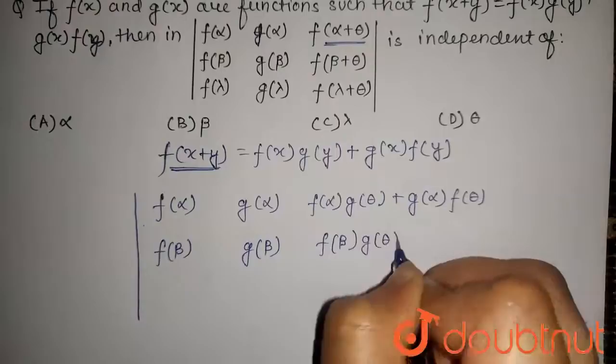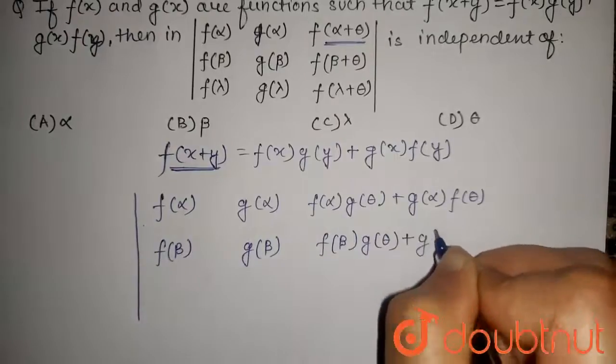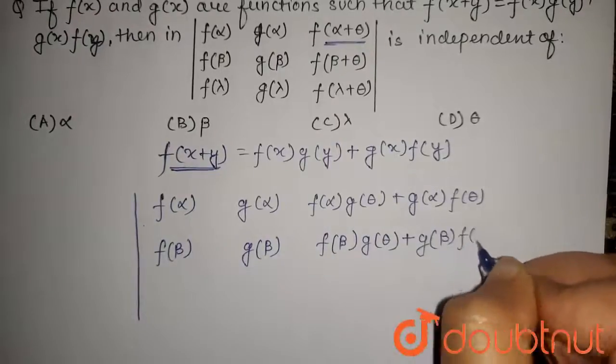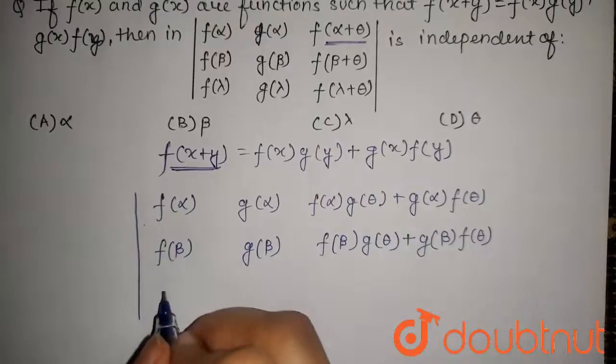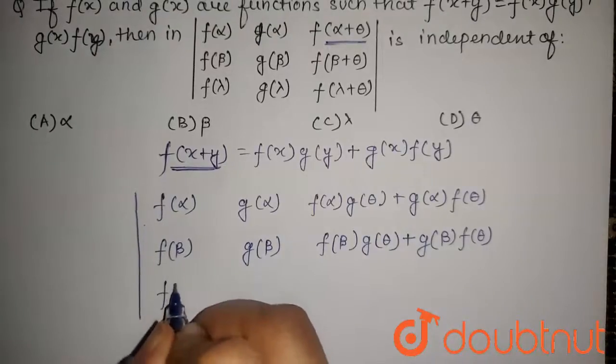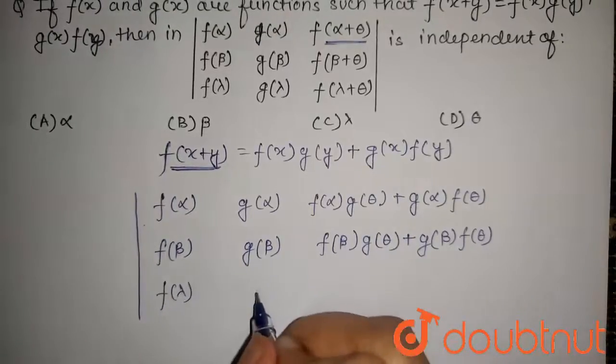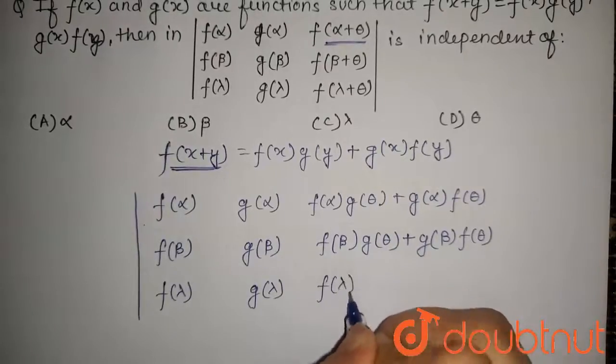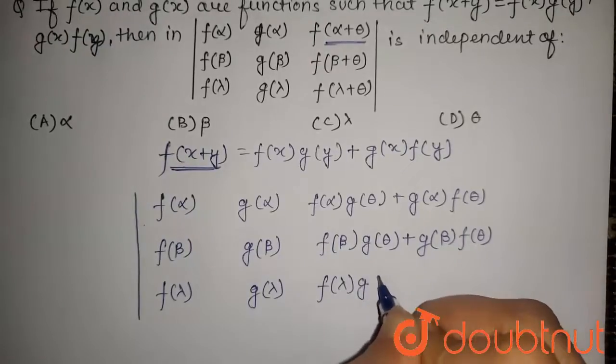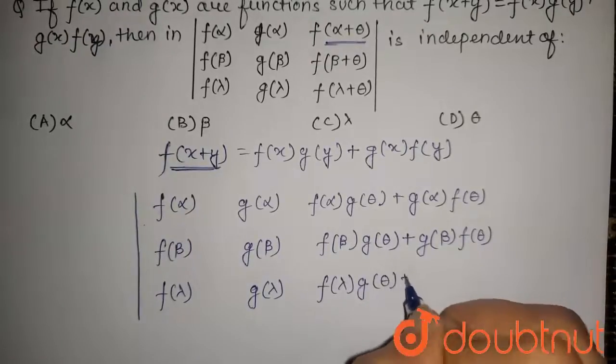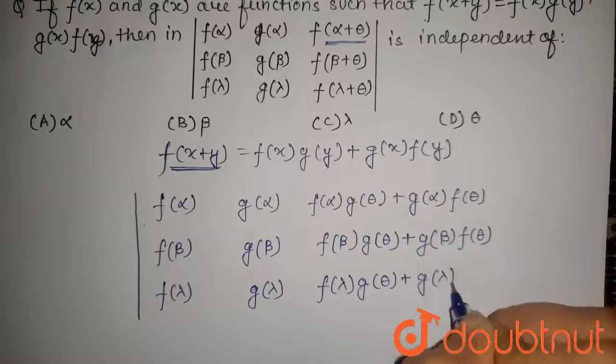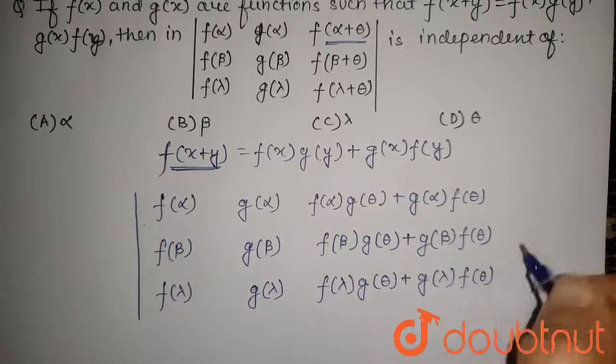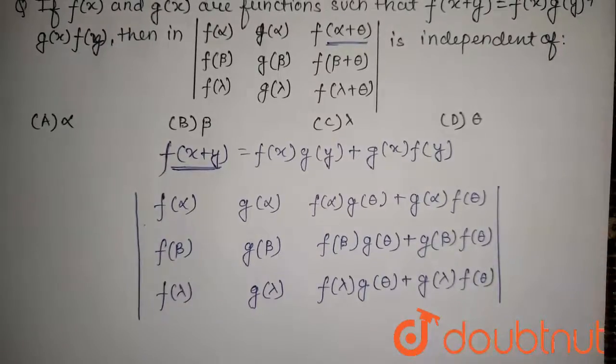The third row will be f lambda, g lambda, and f lambda g theta plus g lambda f theta. So this will be the determinant.